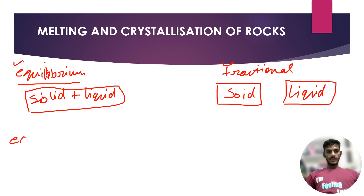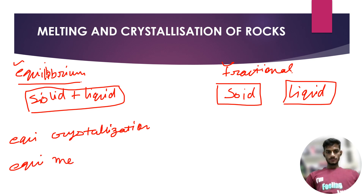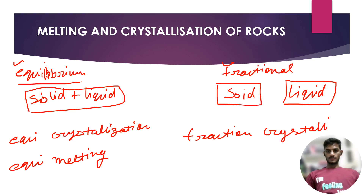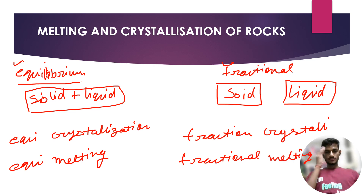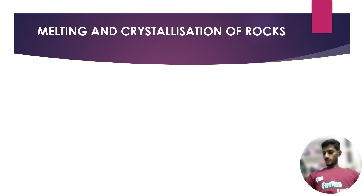Based on this, we have two models: the equilibrium model and the fractional model. So we have equilibrium crystallization, equilibrium melting, fractional crystallization, and fractional melting. Now let's see each one of these.